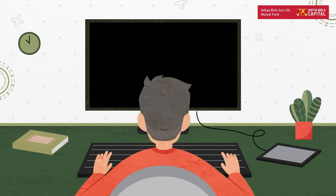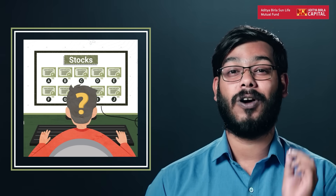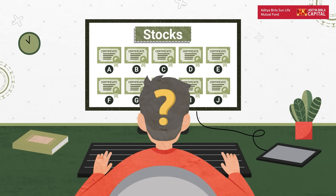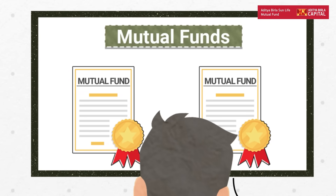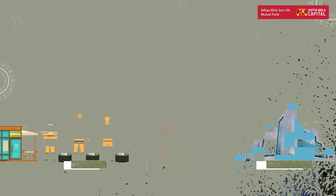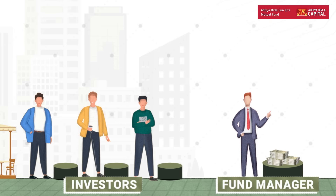Well, most of us would take the instructor option and learn from a professional directly. Similarly, when it comes to investing in the stock market, most of us don't know how to invest or how to value a company properly. So for most of us, it is best to go through the mutual funds route. Simply put, mutual funds are pools of investments made by you and me, managed by a professional fund manager — just like a professional swimming instructor.